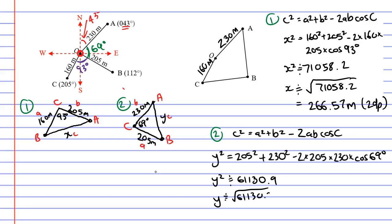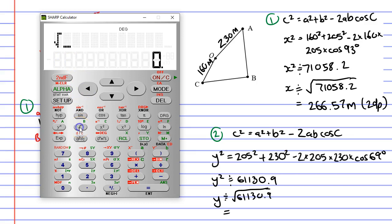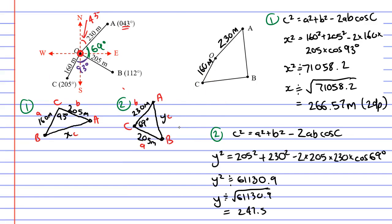So to find Y, we need to square root this value. But when we square root it, we're going to use the original value there. We're going to click square root. It's going to automatically put that previous answer in there for you, giving us 247.25. And remembering that when we round to two decimal places, we can write 2dp next to it. So we've got the length of these other two sides.